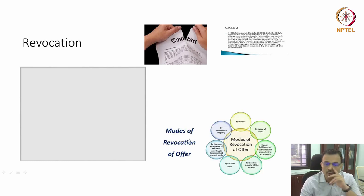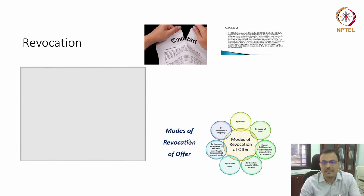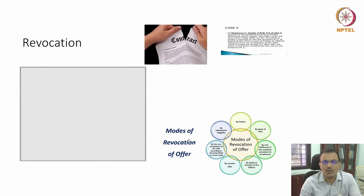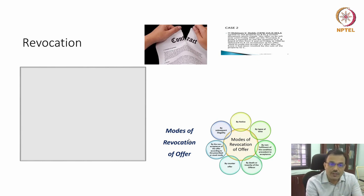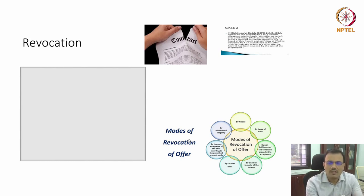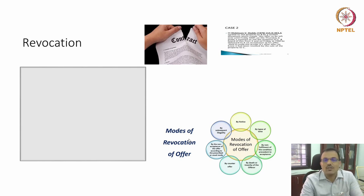How can you revoke? That is very critical. Revocation has to be communicated, just like the offer and acceptance has to be communicated. You have to give notice — you have to inform the other party about your intention to revoke. By notice, I think, is one of the essential methods by which revocation can take place. The offerer informs the offeree; the notice can be written or oral today — it could be by email or any other mechanism — but you give that notice and you can revoke.